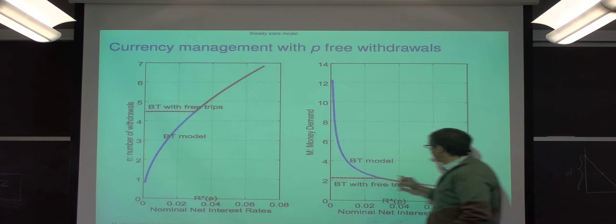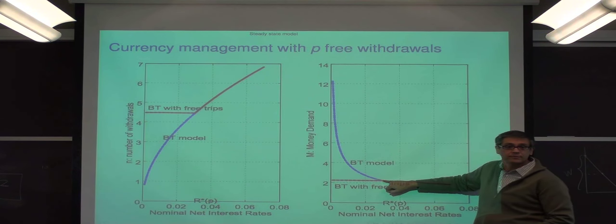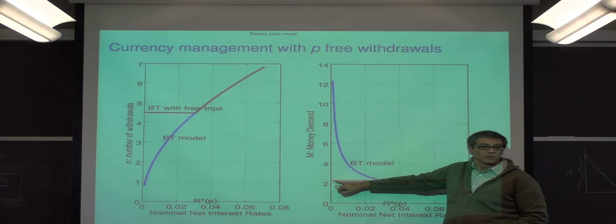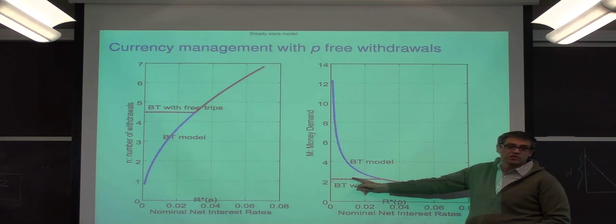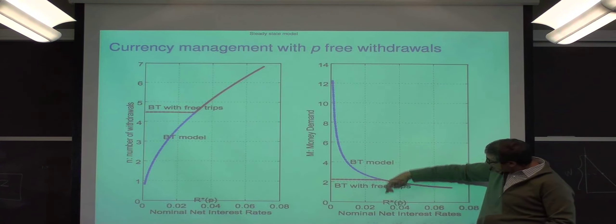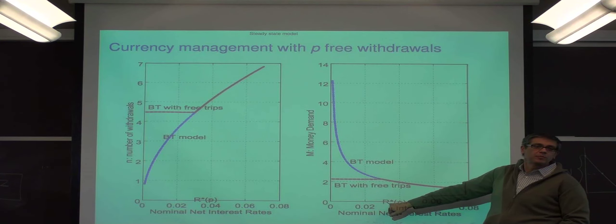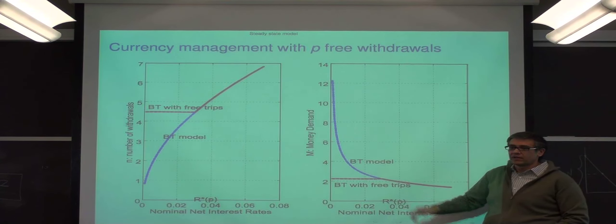That means it's going to be also flat here, the money demand. So if you look at the elasticity of this money demand with respect to R, it will be either one-half or zero. And where this is cutting would depend on a comparison of R with this parameter P.